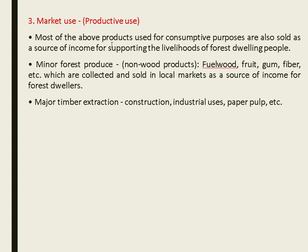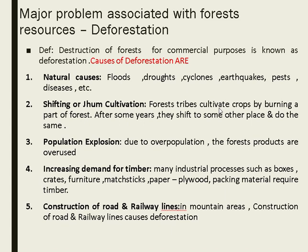In terms of market use, forest products can be sold in nearby markets and act as a source of livelihood. Minor forest products include fuel wood, gum, and fiber. The major forest product is timber, which can be used for construction, industrial purposes, and paper pulp.